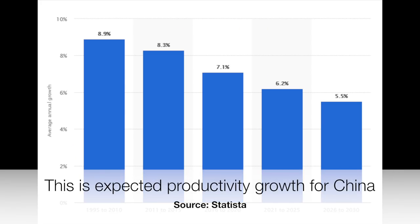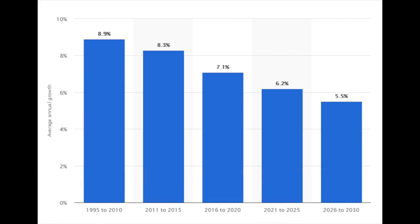China is not expected to grow at 10% as it has been in the past, but 5–6–7% — a healthy growth rate over the long term — is sufficient to lead to more economic growth, a better time in China, and good investment returns.